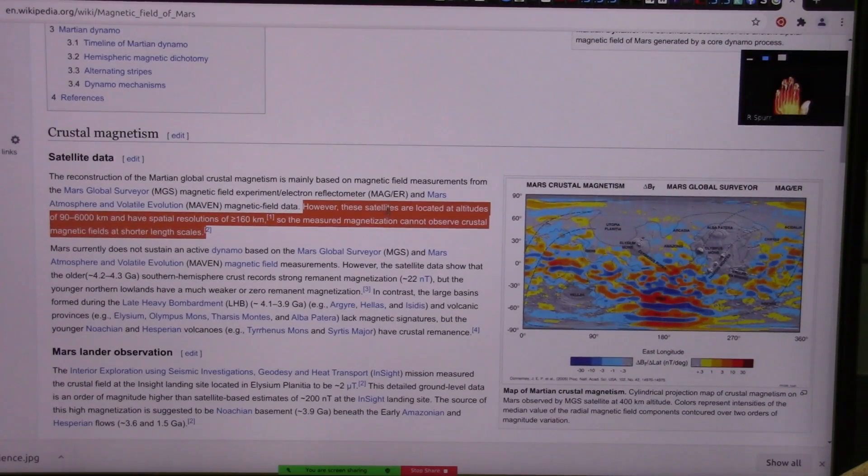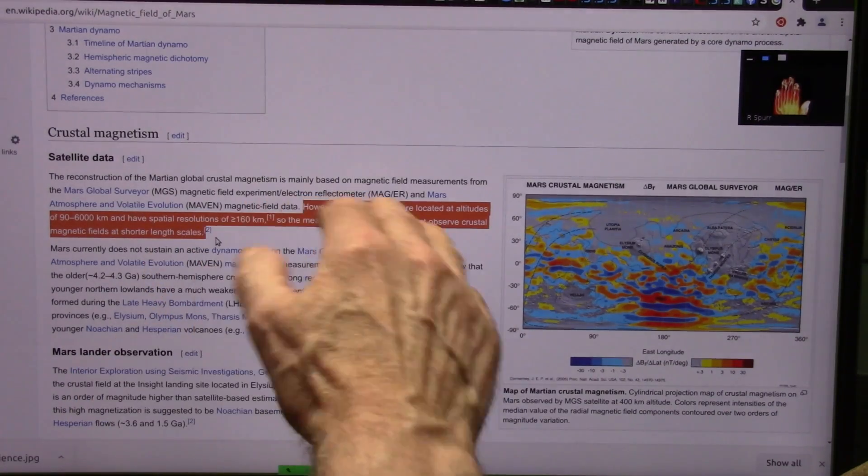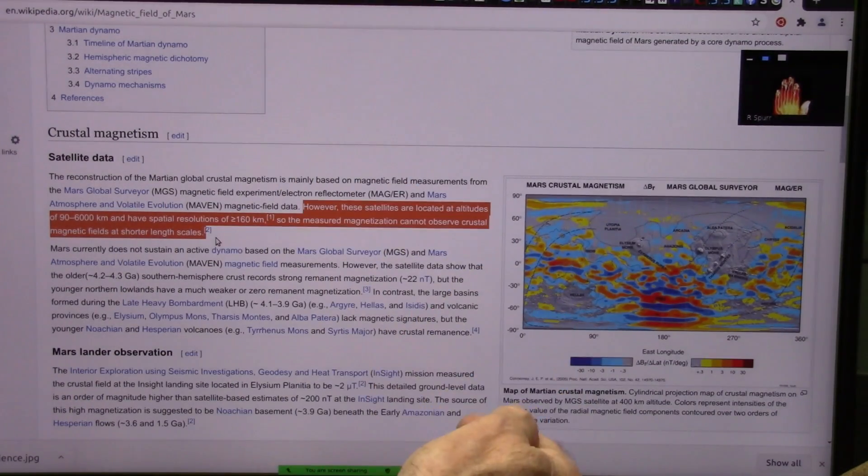It says these satellites are located at altitudes too high and have a spatial resolution of greater than 160 kilometers. So the measured magnetization cannot observe crustal magnetic fields at shorter length scales. So the magnetic fields very close to the surface, they can't detect. And guess what?